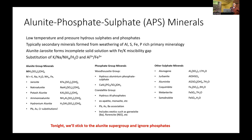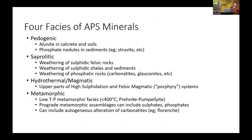We'll stick to alunite tonight and leave the phosphates aside. There are four facets of APS minerals: pedogenic, found in calcrete and soils; saprolytic alunite from weathering of sulfidic felsic rocks, sulfidic shales and sediments, and phosphatic rocks including carbonatites and glauconites. Most alunite, however, is found in the upper parts of high-sulfidation felsic magmatic porphyry systems. You can also get pro-grade metamorphic versions up to about 200–300 degrees, and alteration of phosphates in rare-earth-bearing carbonatites to florencite, goyazite, etc.